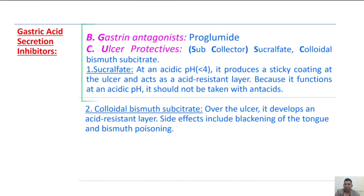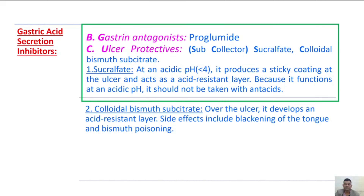So far we have discussed the drugs that inhibit gastric acid secretion. Next, the second anti-ulcer drug: gastrin antagonist. These are the drugs that inhibit gastrin. The drug is proglumide.